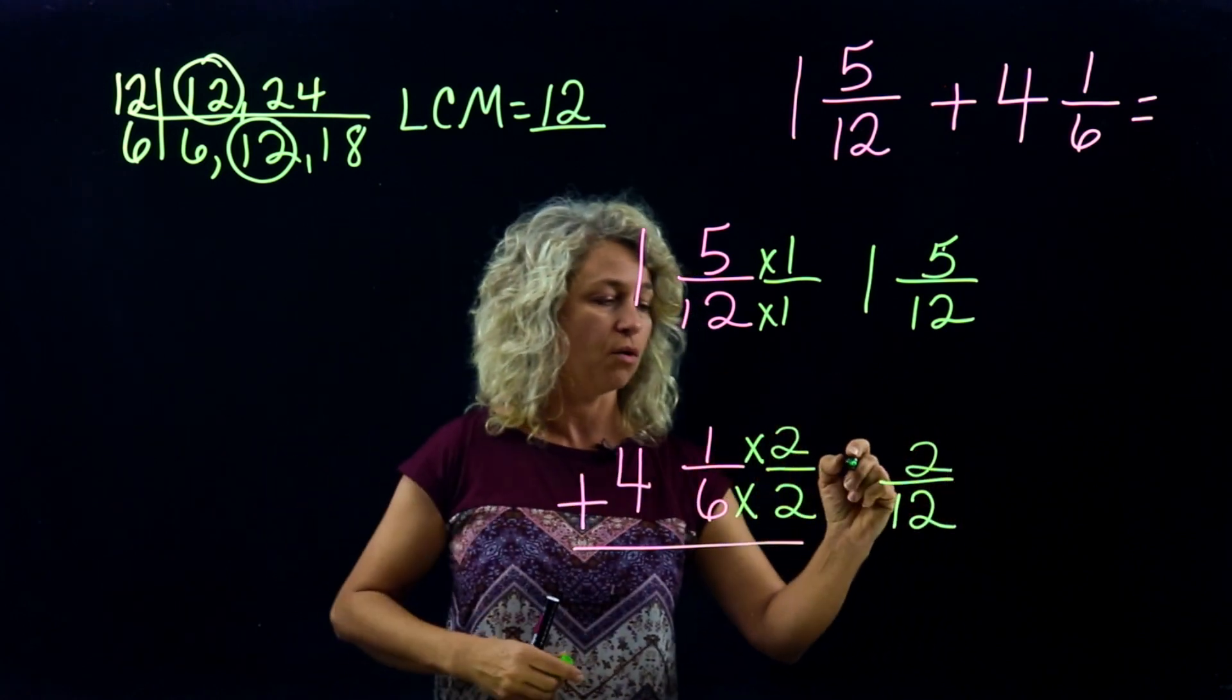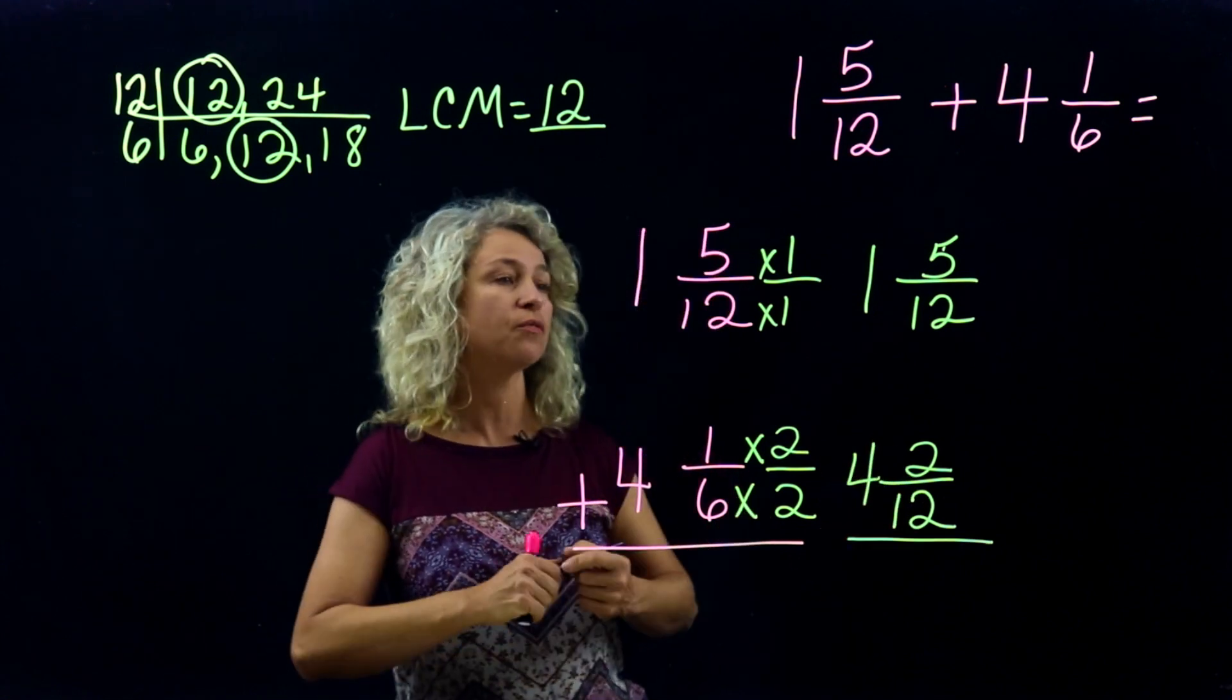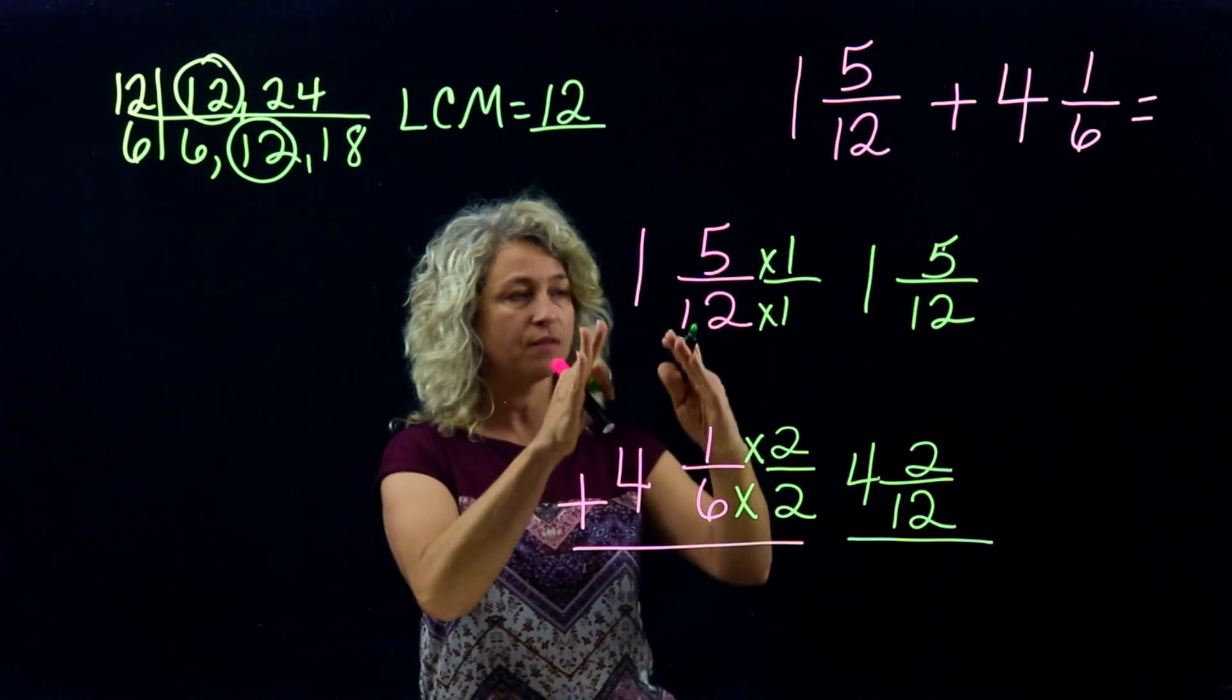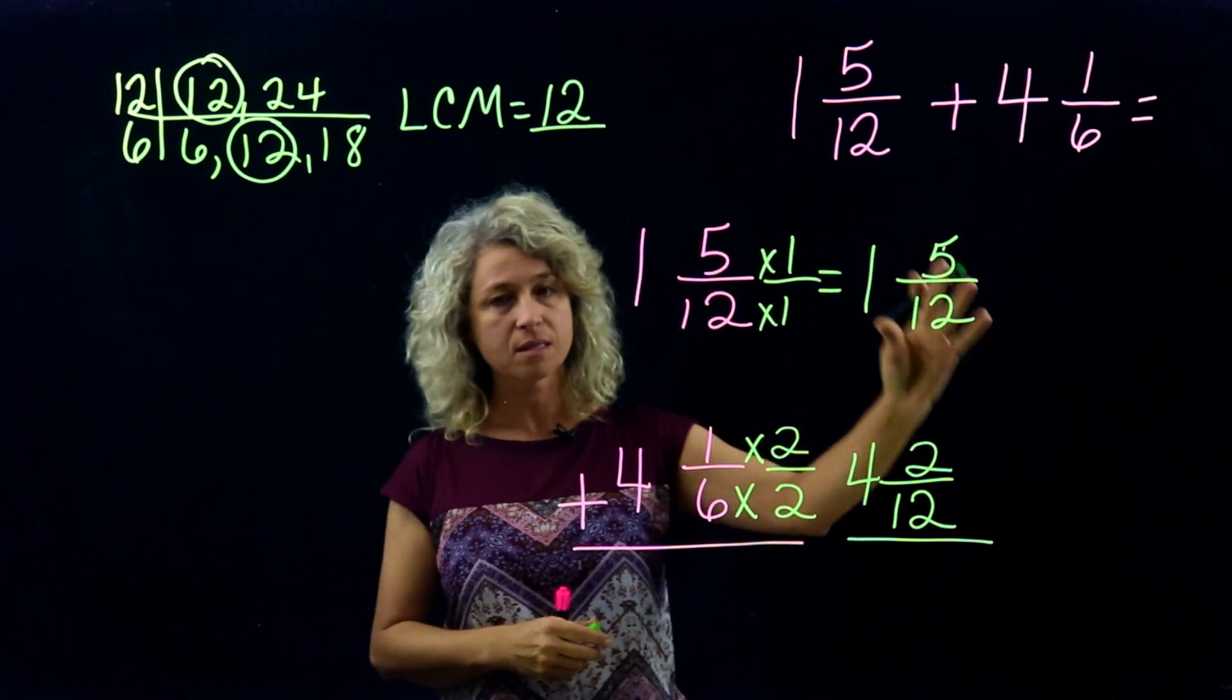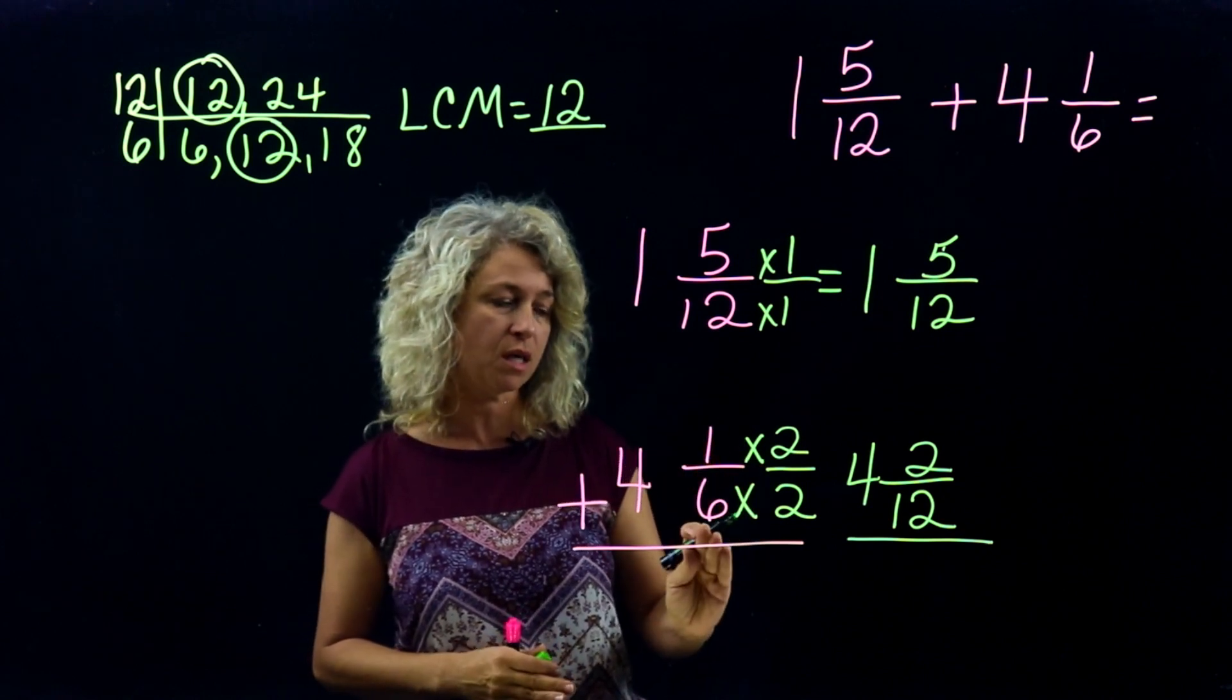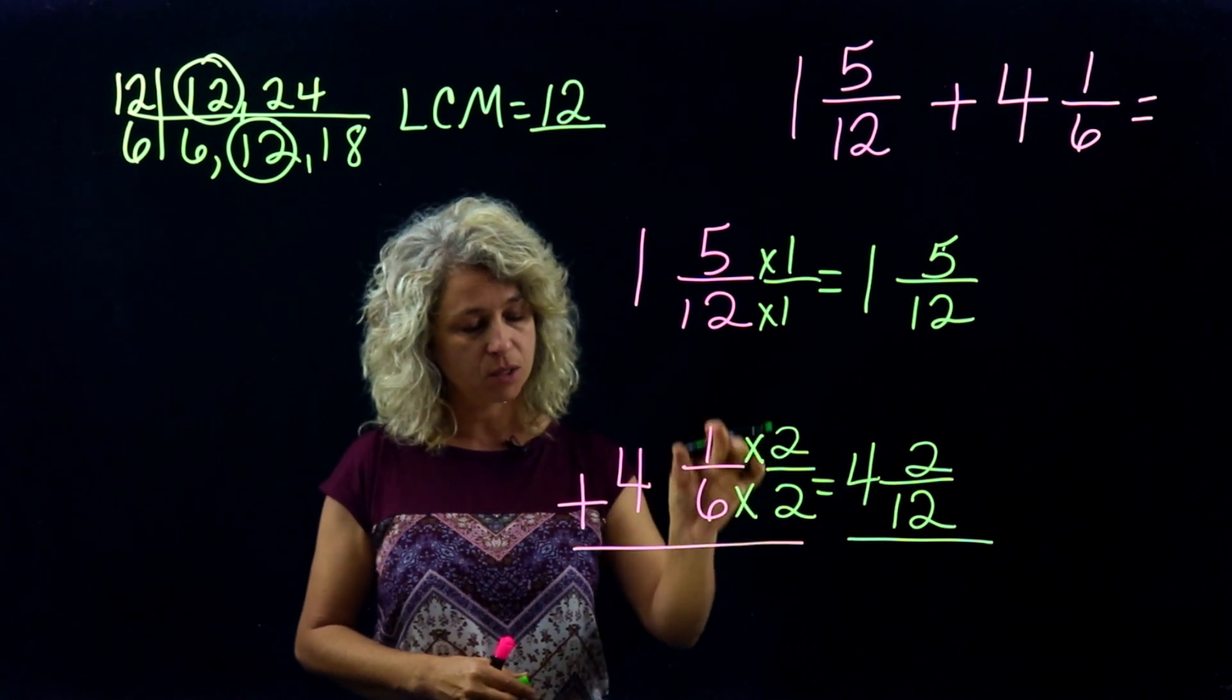Alright, so we made equivalent fractions. So we know that 1 and 5/12, this equals 1 and 5/12. It's the same. 4 and 1/6 equals 4 and 2/12. That's the same as 1/6.